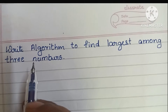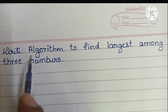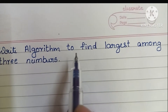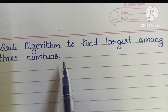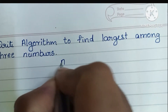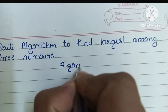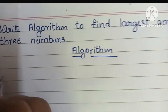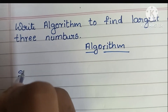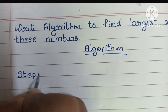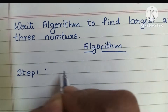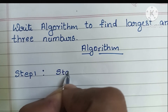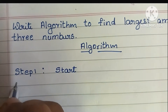Hi guys, in this video we're going to learn how to write an algorithm to find the largest among three numbers. An algorithm is a step-by-step process to solve a problem. Step 1: an algorithm always starts with the start statement, so first we have to write the start statement.